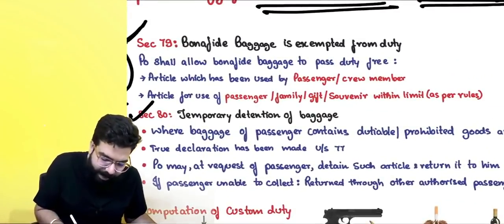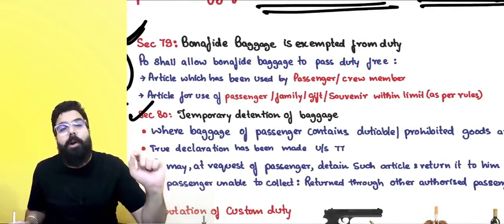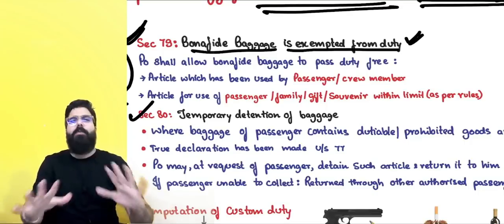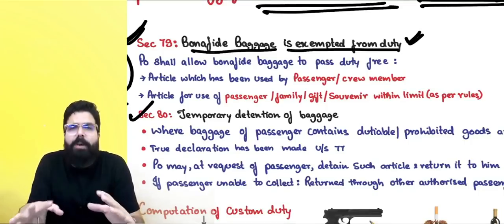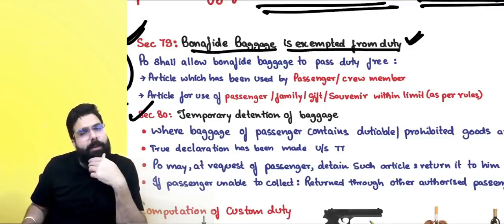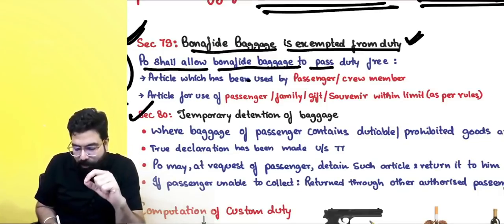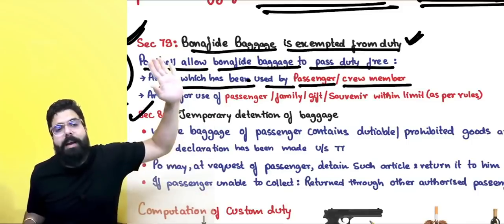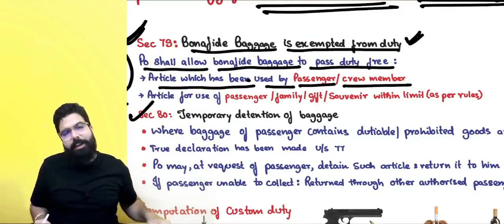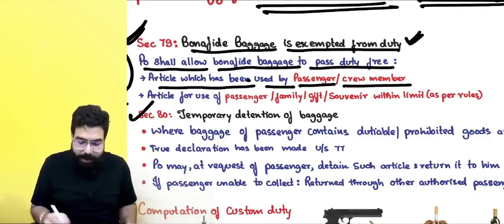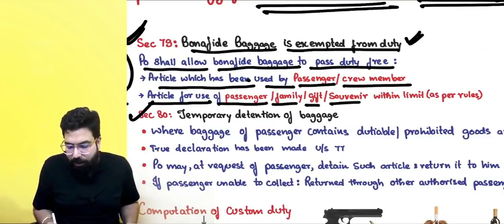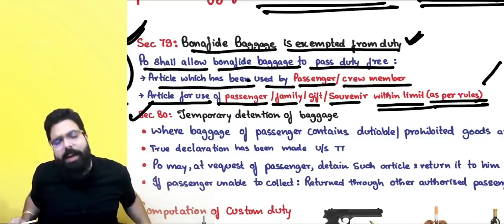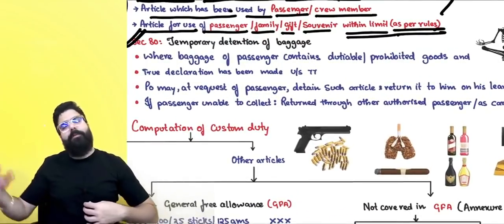Section 79 talks about bona fide baggage. Bona fide means you have made a true declaration. Bona fide baggage is exempted from duty — the proper officer shall allow bona fide baggage to pass duty-free. Articles being used by the passenger or crew member as personal effects are allowed free of cost. Articles for use of the passenger, family, gifts, and souvenirs within the limits as per rules will also be cleared without duty; exceeding the limit requires payment of duty.